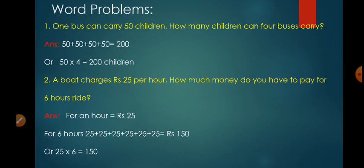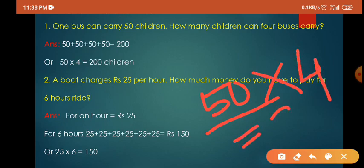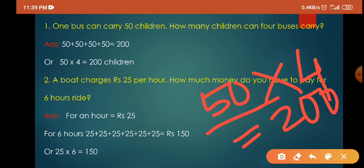Now we have some word problems. Question 1: one bus can carry 50 children — how many children can 4 buses carry? In 1 bus it is 50 children, so for 4 buses you add 50 four times: 50 plus 50 plus 50 plus 50. Instead of addition you can multiply, because repeated addition is multiplication: 50 multiplied by 4 equals 200. So 200 children can be carried by 4 buses.